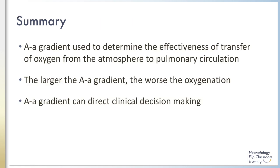In this module, you learned how the alveolar arterial gradient is used to determine whether the lungs are transferring oxygen from the atmosphere to the pulmonary circulation appropriately. The larger the A-a gradient, the worse the oxygen transfer to the pulmonary circulation. Calculating the A-a gradient is a useful tool to determine whether a patient requires ECMO.